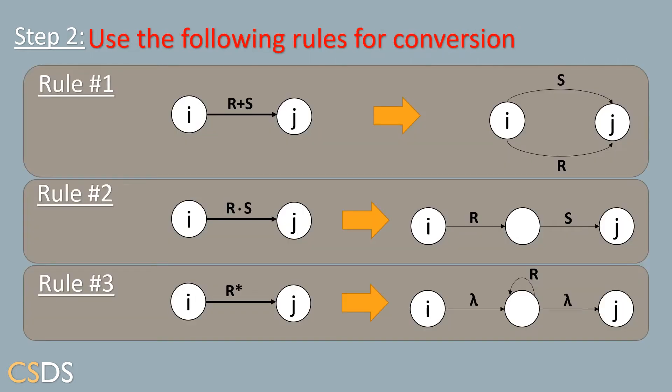For our next step and our final step, we'll use the following three rules in order to convert transitions in our automata. Each rule refers to a different type of transition.